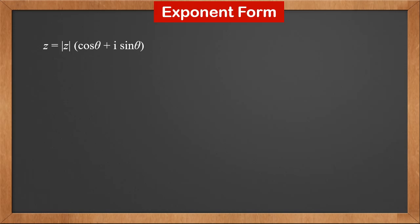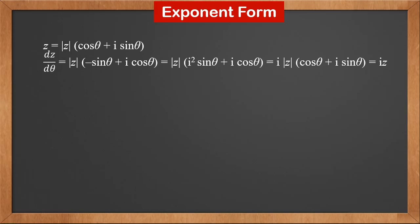We know a complex number z can be written in polar form: z's modulus times cosine theta plus i sine theta, where theta is z's argument. Let's derive z with respect to theta. We know the derivative of cosine theta is minus sine theta, and the derivative of sine theta is cosine theta. So dz over d theta is z's modulus times minus sine theta plus i cosine theta.